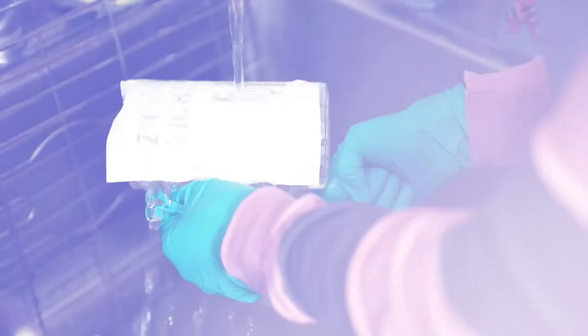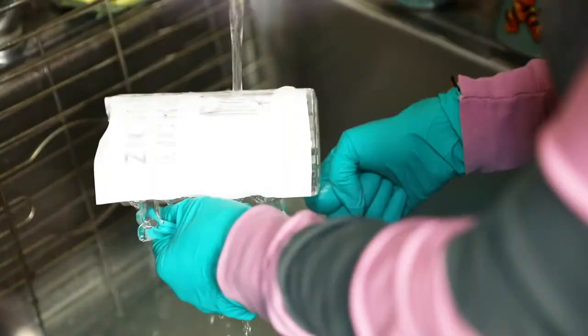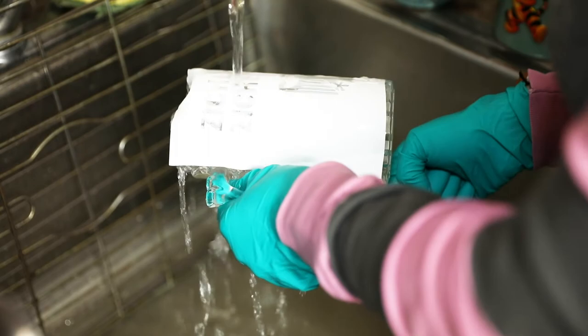Once you get most of it off, run it under cold water to clear off the remaining etching cream. Then, peel off the vinyl and rinse the glass again.